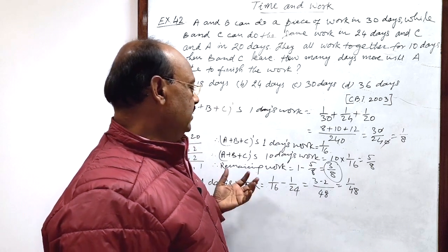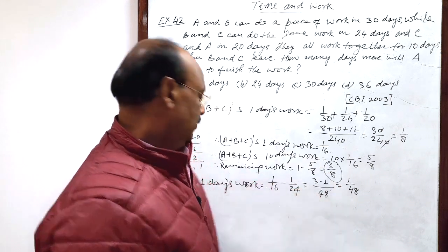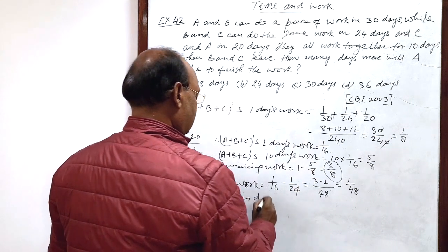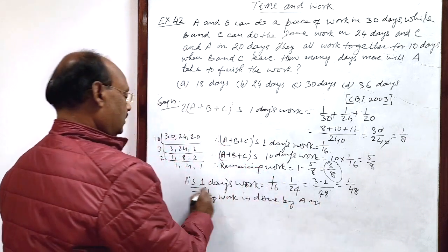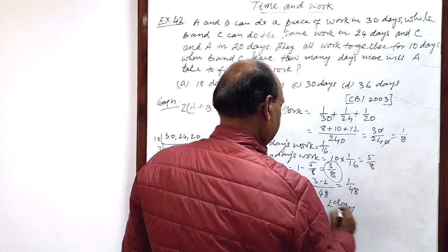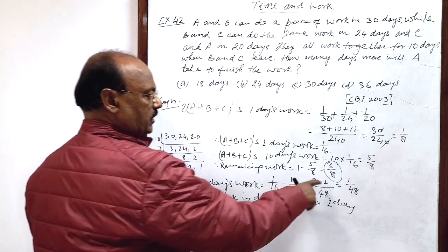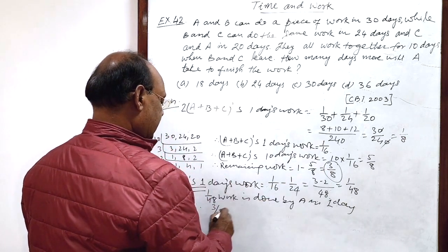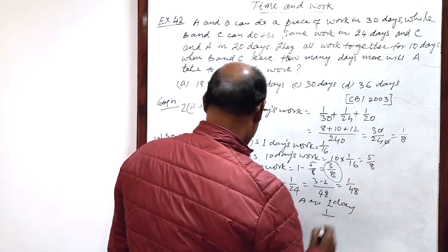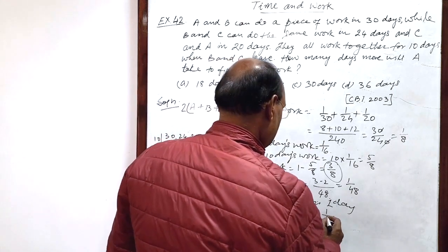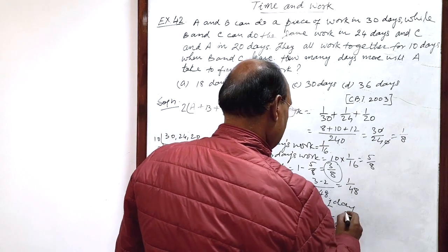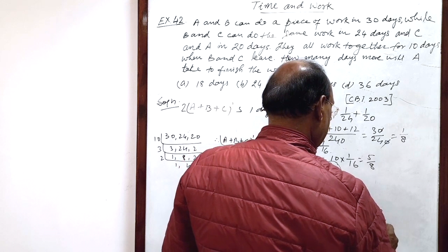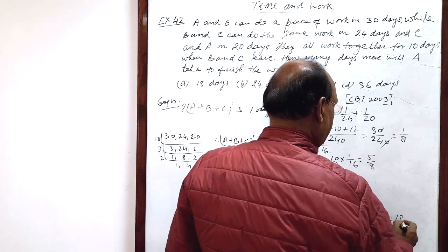This is amount of work done by A in 1 day. Now we have to calculate how many days are required by A to finish this much work. By unitary method, 1 by 48 work is done by A in 1 day. Therefore, remaining work 3 by 8 work is done by A in 1 divided by 1 by 48 into 3 by 8. Let us simplify it. This is 48 into 3 by 8. 8 6's are 48. 6 into 3 is equal to 18 days.